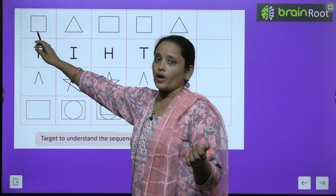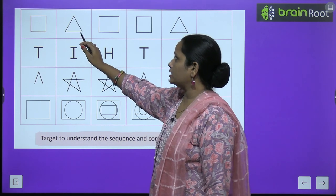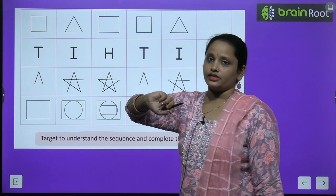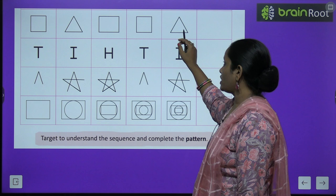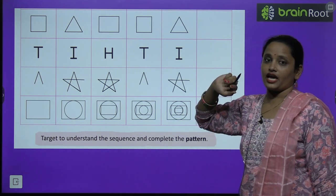This is what we call pattern, repeating one thing, repeating one sequence again and again. Now look, what is here? Square, triangle, rectangle, square, triangle, rectangle.